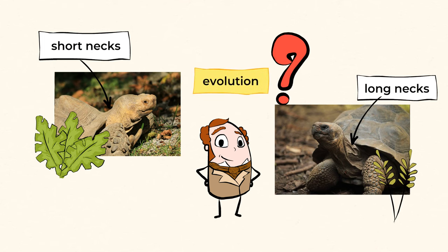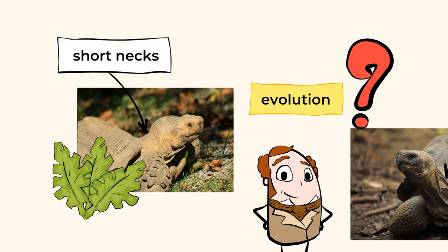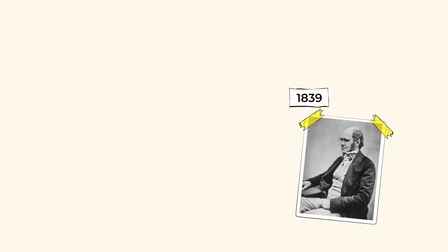Well, evolution. Over time, the tortoises in the drier areas developed long necks in order for them to reach the bushes for certain types of food. While the tortoises in the humid areas could easily eat grass with their short necks and protect themselves from predators due to their dome-shaped shells.